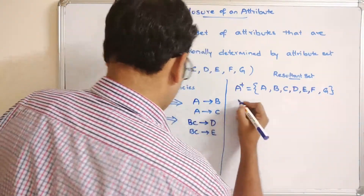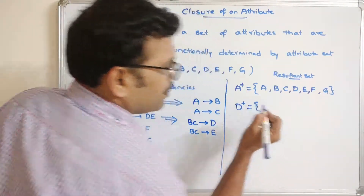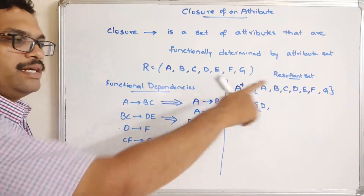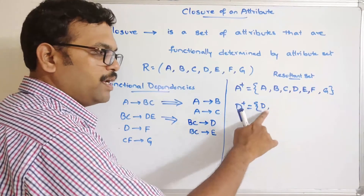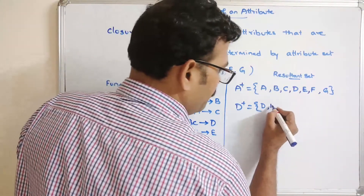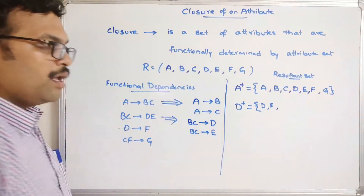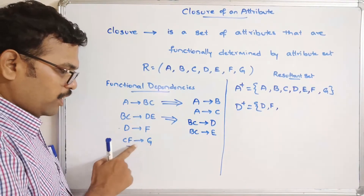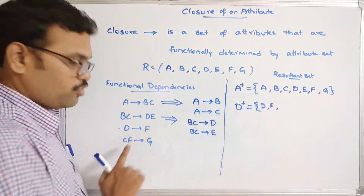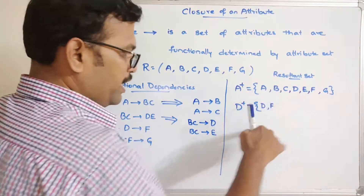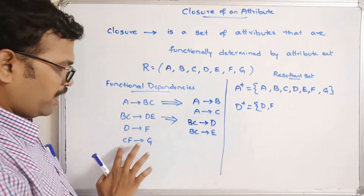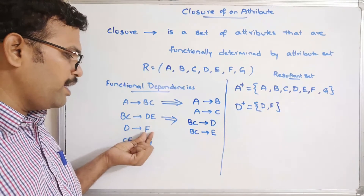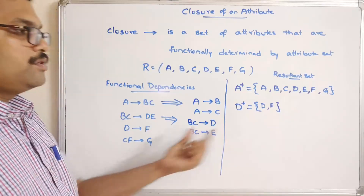Now let us find d+. Start with {d}. From d→f, we get f. Resultant set: {d, f}. We check cf→g — but we only have f, not c, so we cannot determine g. No other attributes can be determined from d or f alone. Therefore, d+ = {d, f}.